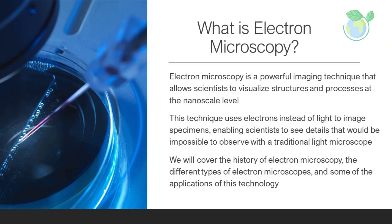What is electron microscopy? Electron microscopy is a powerful imaging technique that allows scientists to visualize structures and processes at the nanoscale level. This technique uses electrons instead of light to image specimens, enabling scientists to see details that would be impossible to observe with a traditional light microscope.